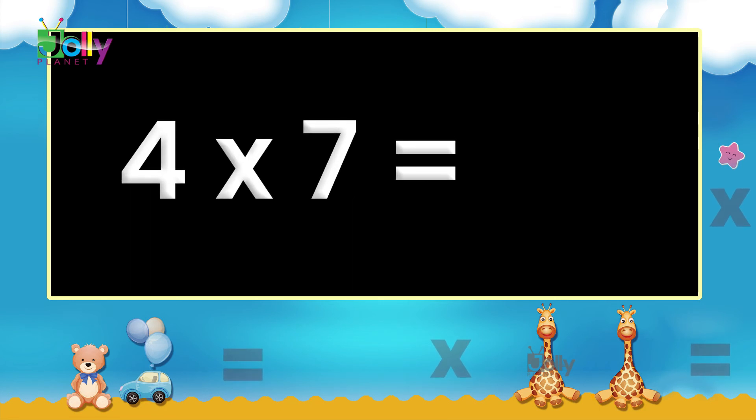Four sevens are twenty-eight. Four sevens are twenty-eight.